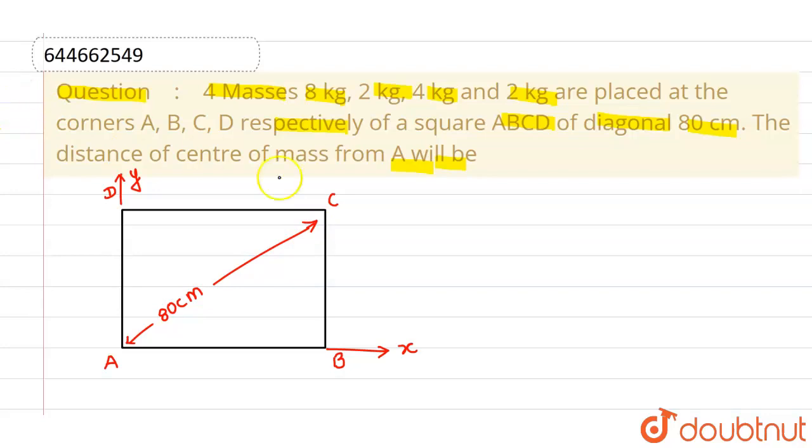So this particular length is 80 cm. Now, if the side of square is a, then the diagonal will be a√2 which is given as 80 cm. So from here, the side of the square is 80 by √2 cm, which can be written as 40√2 cm.